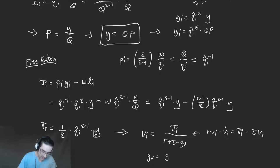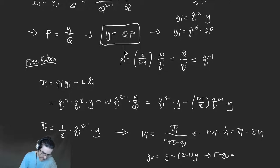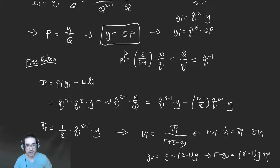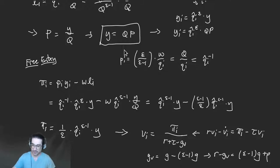That dragging down from capital Q should be accounted for in gV as well. It's Q to the epsilon minus one, so Q is growing at rate g and you get a minus epsilon minus one times g factor. So gV is going to have some g growth from Y — remember Y has the same growth rate as Q, your labor productivity — minus epsilon minus one times g. Therefore r minus gV equals epsilon minus one times g plus rho.